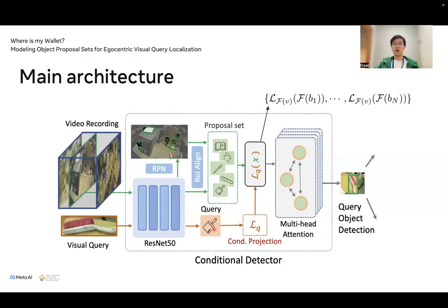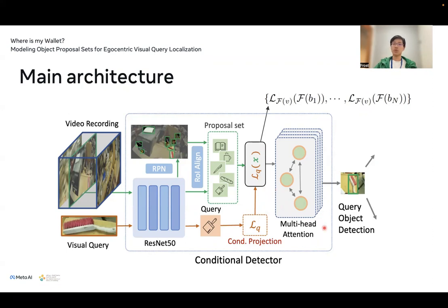On the bottom branch, when we get the query in its feature representation, we train the conditional projection layer. This conditional projection creates a unique transformation depending on the query. We apply this transformation on each feature representation of the proposal set, then take those unique proposal embeddings as a set, sending them to the input of the multi-head attention block. The last layer classifies and localizes each proposal. We call this architecture our conditional detector.